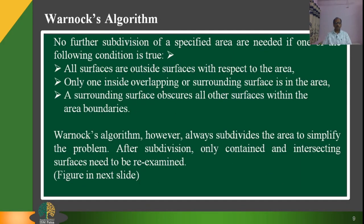No further subdivision of a specified area is needed if one of the following conditions is true: all surfaces are outside the area; only one inside, overlapping, or surrounding surface is in the area; or a surrounding surface obscures all other surfaces within the area boundaries. Warnock's algorithm always subdivides the area to simplify the problem, and after subdivision, only contained and intersecting surfaces need to be re-examined.